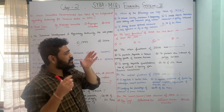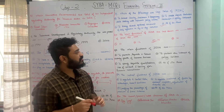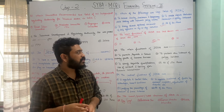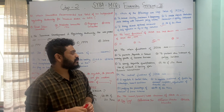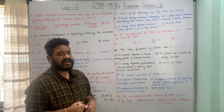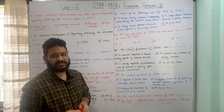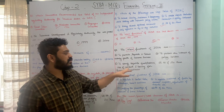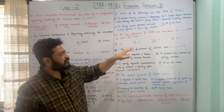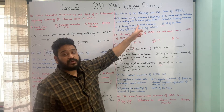The next question asks: what are the main functions of IRDA? Option A - to promote, regulate and ensure orderly growth of insurance business in India; Option B - to protect the interests of policyholders; Option C - to specify requisite qualifications, code of conduct and training for insurance intermediaries; Option D - all of the above. The correct answer is Option D — all three are main functions of IRDA.